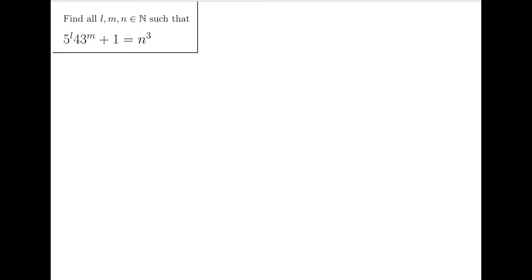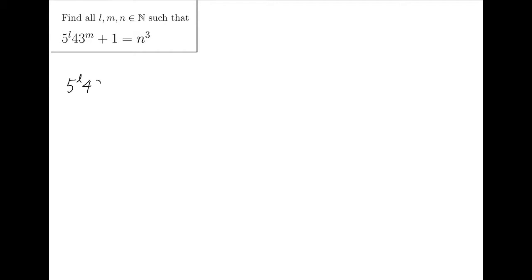We notice that the left-hand side consists of prime powers, so if they can equal some factorizable expressions, then we are good, as there will be very few factoring cases. So I move the 1 to the right-hand side, and it says 5 to the L, 43 to the M equals N cubed minus 1.